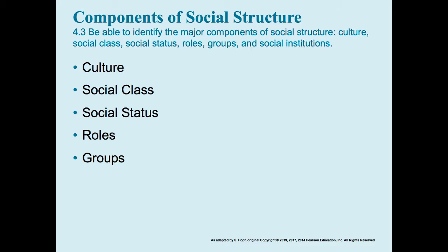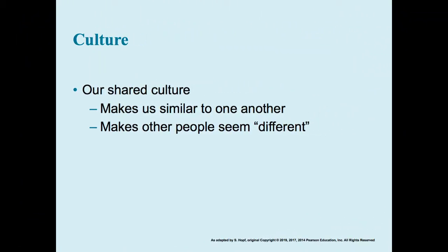We'll look at the different components of the social structure — what they mean and how they operate. These components include culture, social class, social status, roles, and groups. We've already talked at length about culture and how it bonds us together and allows us to have a shared, common way of understanding the world. It also makes people who don't share the same culture feel very different from us.